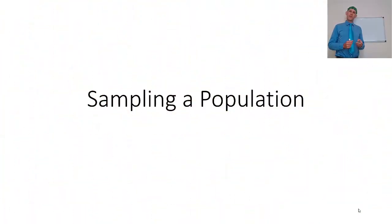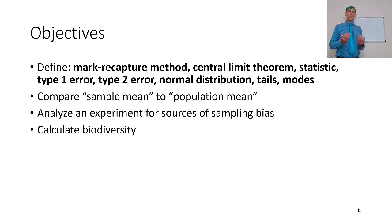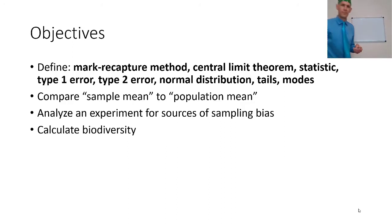So, let's sample a population in theory. I want you to be able to define mark-recapture method, the central limit theorem, what is a statistic, what are type 1 and type 2 errors, what is a normal distribution as well as a bimodal distribution, and what are tails, modes, and also probably skew. Compare the sample mean to the population mean and analyze the experiment for sources of sampling bias as well. Calculated biodiversity is not going to be on this one.